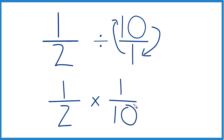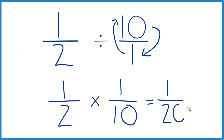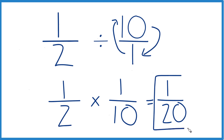Then with fractions, when you multiply fractions, you multiply the numerators. 1 times 1, that's 1. And then we multiply the denominators. 2 times 10, that's 20. So 1 half divided by 10, or 1 half times 1 tenth, that's 1 twentieth.